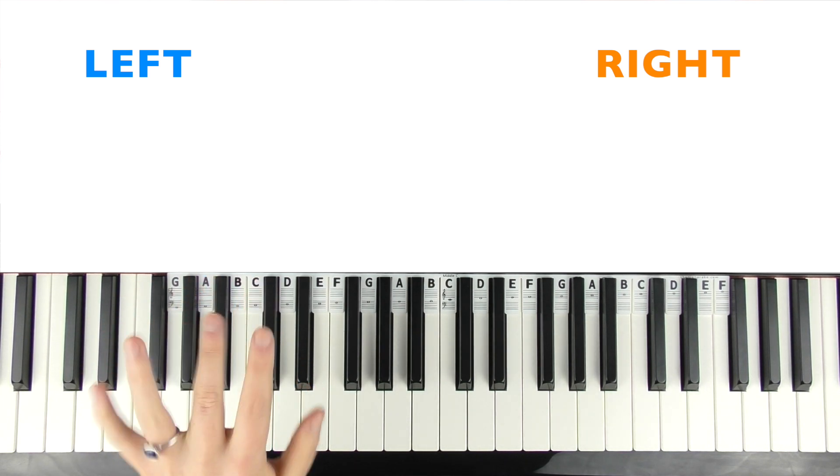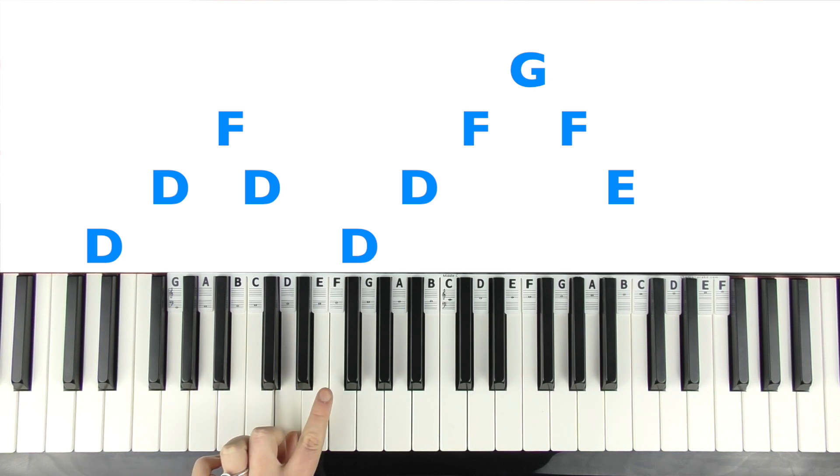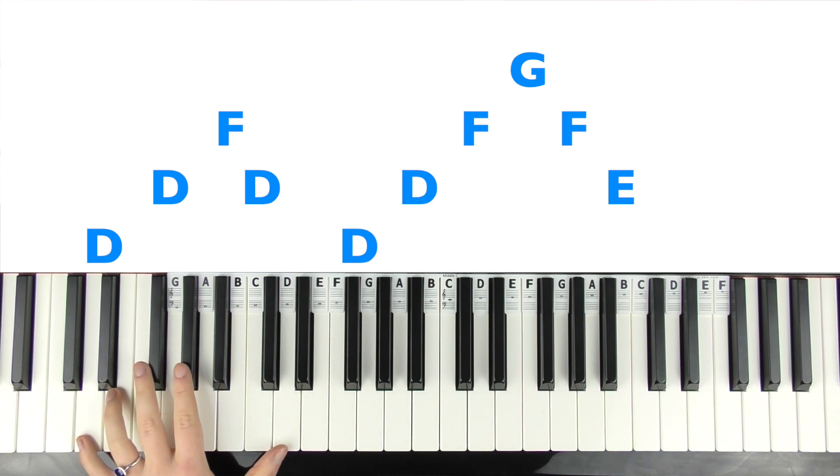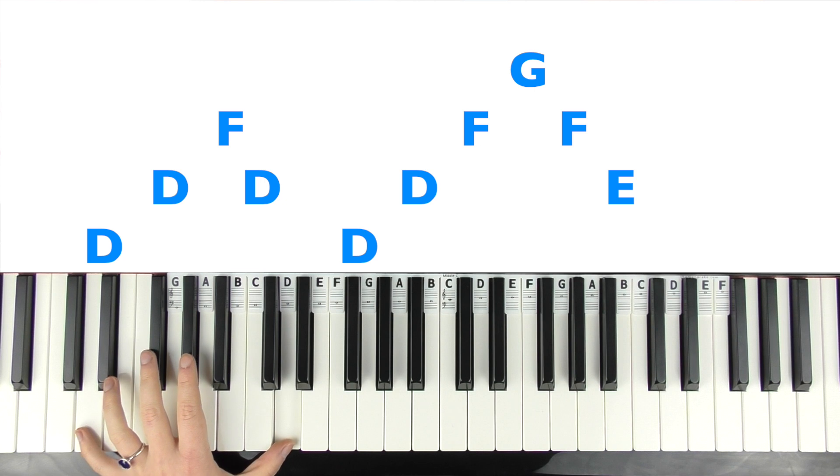So I'll teach you that first. So blue is left hand, orange is right hand. So we'll do left hand first. So this is a low D. Use whichever octaves you have on your piano or keyboard. So we've got D, and then the next D higher. You don't have to play them at the same time. And then you can cross your second finger over to F and then rock back. So we have D, D, F, D.